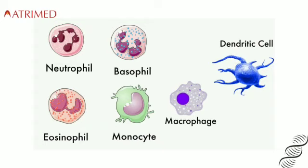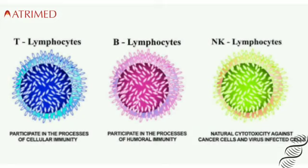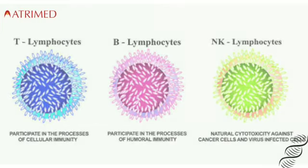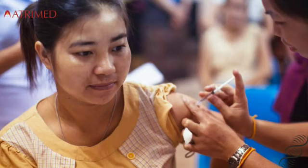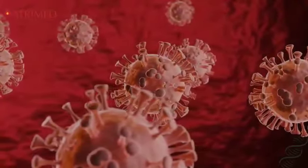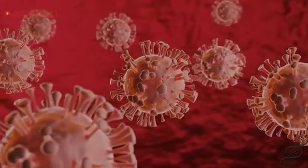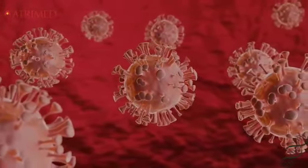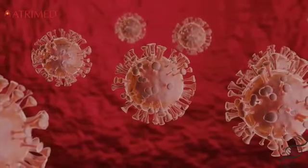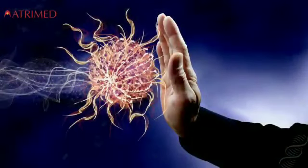Innate immunity means non-specific immunity against any invading pathogen, which is quickly deployed by all the cells we talked about. Acquired immunity is purely mediated by lymphocytes — for example, through vaccination. B cells get activated with memory to that antigen on the pathogen and get deployed when the infection happens next. If we have not had previous exposure or if we are not vaccinated, innate immune responses need to save us from viruses. Most viruses are self-limiting, and hence we survive their assault.